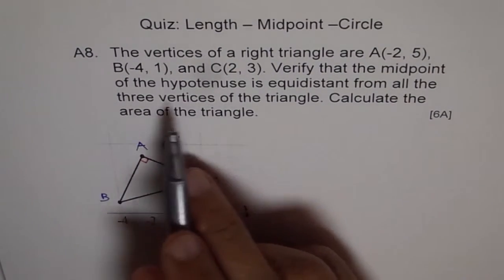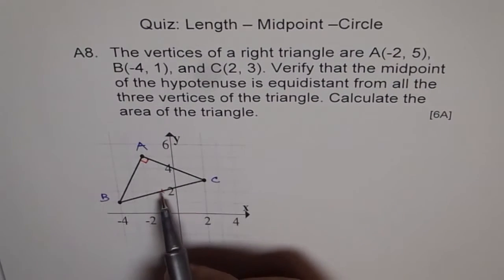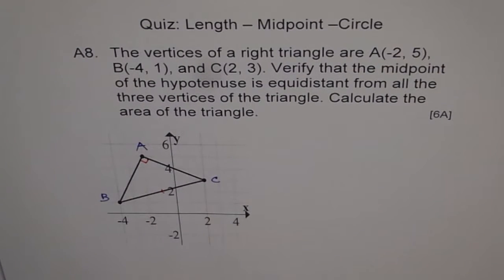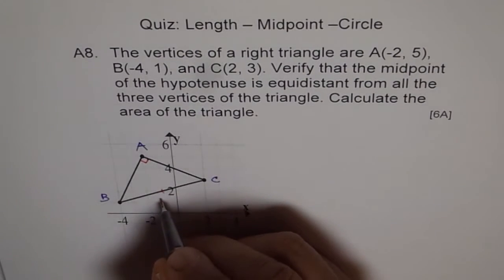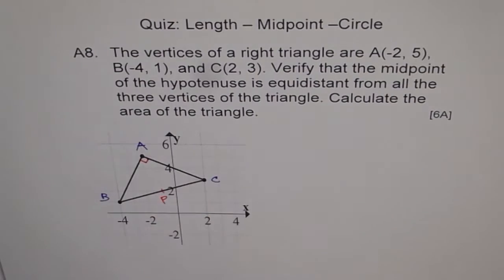Verify that the midpoint of the hypotenuse is equidistant. So first you find the midpoint of BC. So that is, let us say, the point P. Let me call this point as P. And P is midpoint of BC.